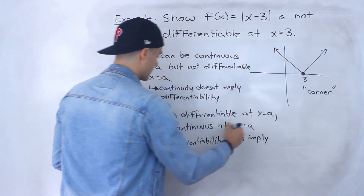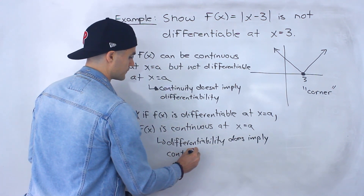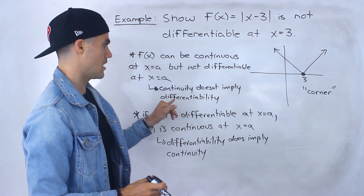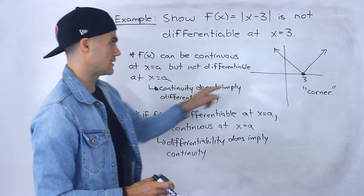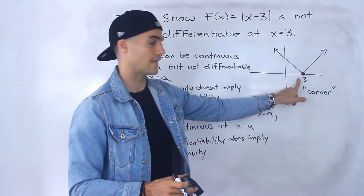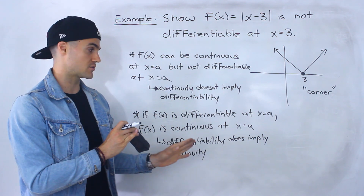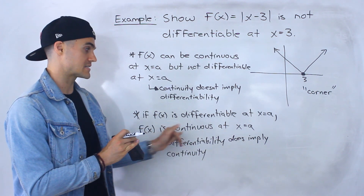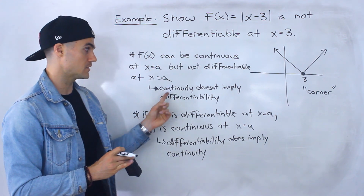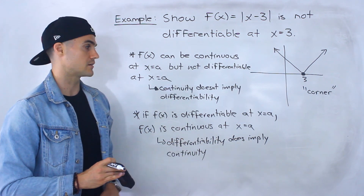The opposite is true, though. If a function is differentiable — if the derivative exists at a certain x value a — then f of x is continuous at that x value of a. So continuity doesn't imply differentiability, but differentiability does imply continuity.